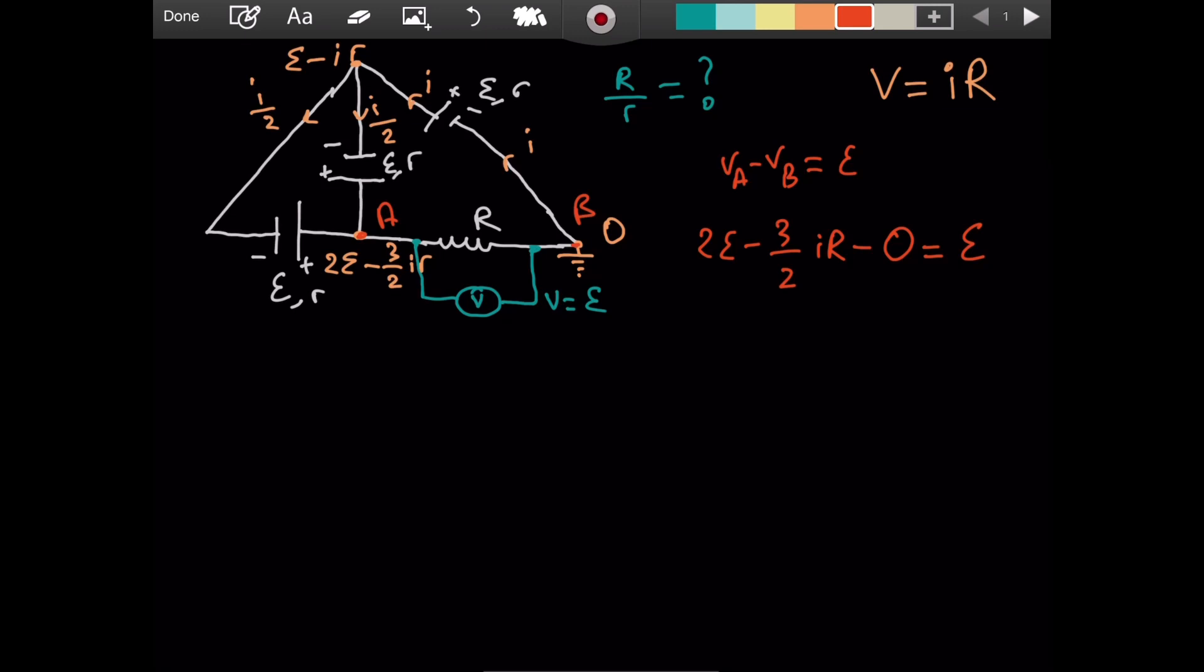But this is equal to epsilon. So if we solve for epsilon, we get that epsilon equals 3 over 2 iR. Oh, excuse me though. This is a huge mistake. The R is not capital. Right? Sorry for that. I was talking a lot at that point. The R is not capital. It is this r. So epsilon is equal to 3 over 2 times i times small case r.